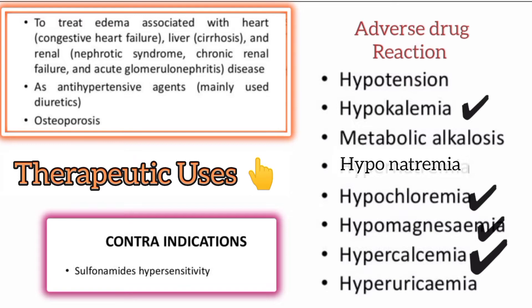Thiazide diuretics are used as anti-hypertensive agents. They are also used for osteoporosis treatment. So to summarize thiazide diuretics: we covered the mechanism of action, adverse drug reactions, therapeutic uses, and contraindications.